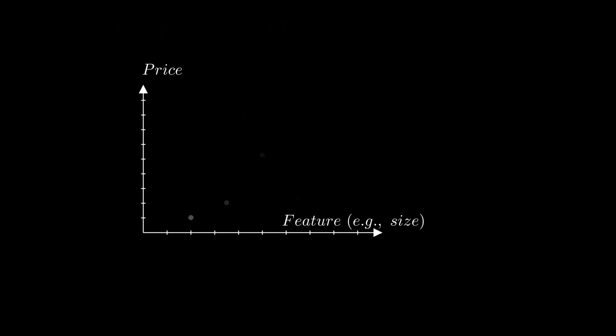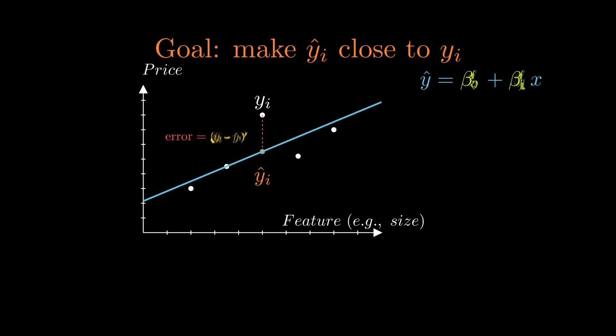Suppose we're training a model to predict house prices. For each house in our data set, we know the actual price, y sub i, and we have the predicted price from our model, y hat sub i. The goal is to make the two as close as possible.